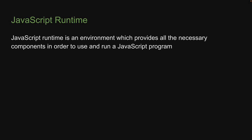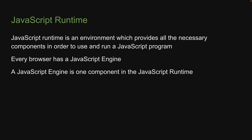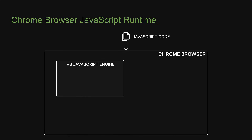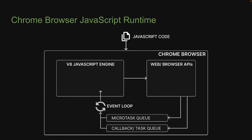In the previous video, I mentioned that every browser has a JavaScript engine. As it turns out, a JavaScript engine is one component in the JavaScript Runtime. So what else does the JavaScript Runtime consist of? Let's understand using Chrome Browser as an example. The JavaScript code we write is executed in Chrome's JavaScript Runtime, which consists of the following components: a JavaScript engine, web APIs, queues, and an event loop.